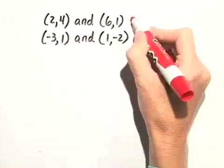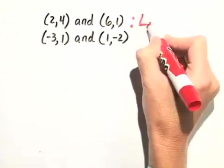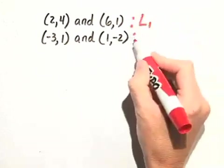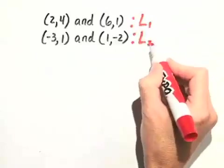Let's call the line passing through the first two points L sub 1 and the line passing through the second two points L sub 2.